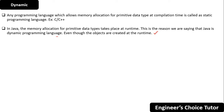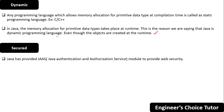The next buzzword is secure — why is Java called a secured programming language? To make Java more secure, the Java designers removed the concept of pointers. Java also provides a module known as JAAS — Java Authentication and Authorization Service — to provide web security. We will learn JAAS in detail when we cover the Spring framework.